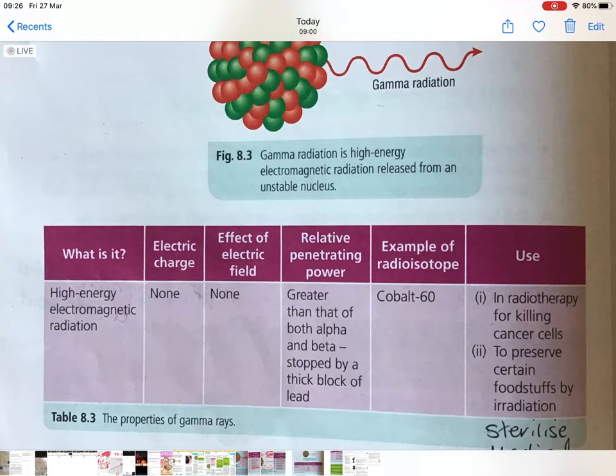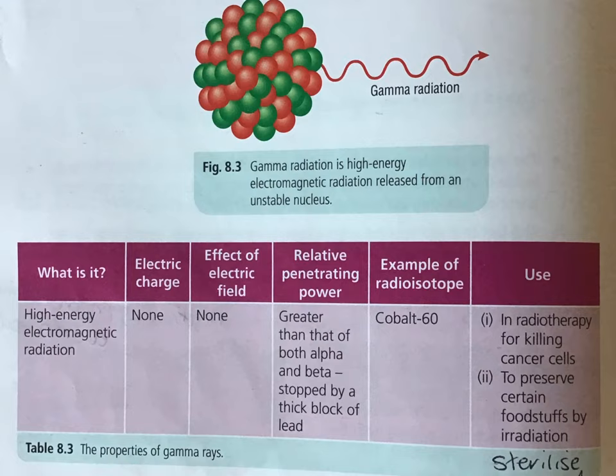The last type of radiation we need to look at is gamma radiation. Gamma radiation is electromagnetic radiation. If it's a type of electromagnetic radiation, it moves like a wave. It doesn't actually have a mass. It's not made up of particles as such. No charge. It's not affected or deflected in an electric field. Very, very penetrating though. This is the most dangerous type of the three types of radiation. It needs a thick block of lead to stop it. An example would be cobalt-60. If you've ever heard of anyone having radiation treatment for cancer, that would be gamma radiation they would use for radiotherapy to preserve foodstuffs, or for sterilization of medical equipment.